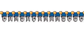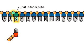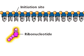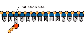Synthesis of the new complementary strand begins when the first nucleotide pairs up with its complement at the initiation site. The first nucleotides to pair up with the parent DNA strand are ribonucleotides. Guanine pairs up with its complementary base, cytosine, at the initiation site.